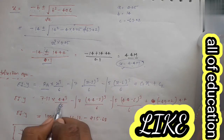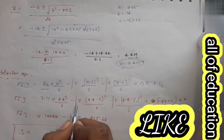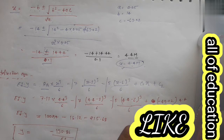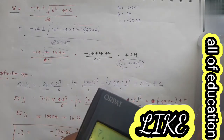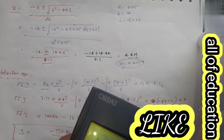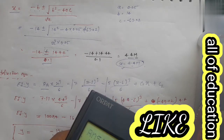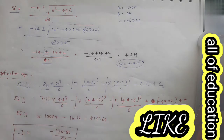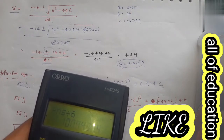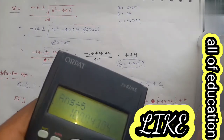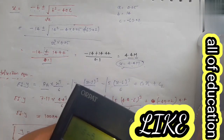Deflection equation: EI·y = RA × x³/6 − 7(x−2)³/6 − 5(x−6)³/6 + C1·x + C2। RA की value 7.11 और x = 4.4 रखते हैं। 7.11 × (4.4)³ / 6 = 100.94।